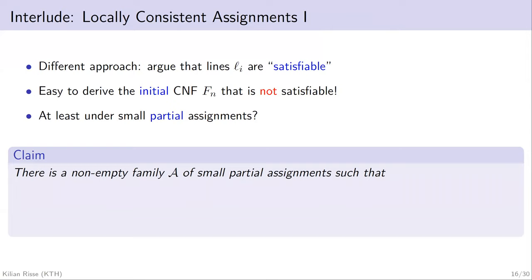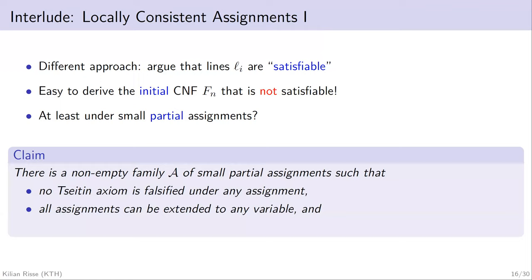There is a different, very nice way to get lower bounds. The idea is to say that lines which have been derived in few steps are somehow still satisfied. Clearly this is not possible because you can derive the initial CNF and it is not satisfied. But we can hope to prove that under partial assignments we are still somewhat satisfied. This is sufficient to argue we never reach contradiction. Formally, we claim there is a non-empty family A of small partial assignments such that no Tseitin axiom is falsified under them, and any small partial assignment in the family can be extended to any variable. We also want closure under size.